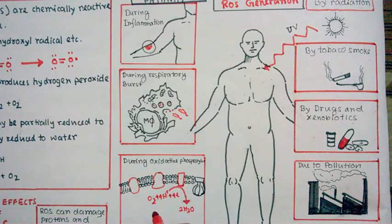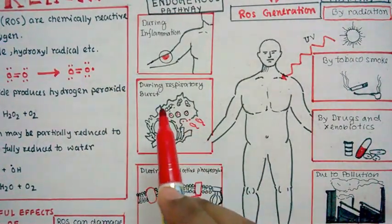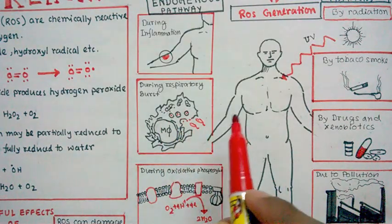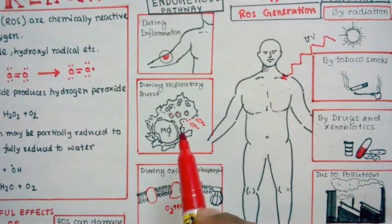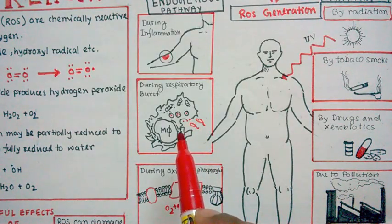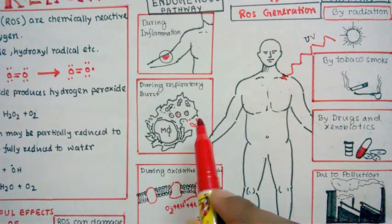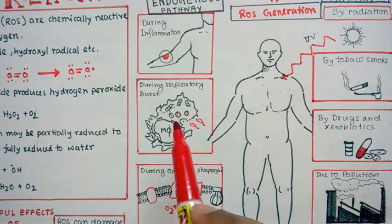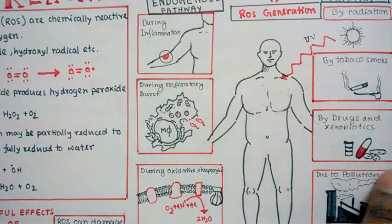So during a normal process in our body, some amount of ROS could be generated. Other steps, like during respiratory burst by macrophages, ROS is also generated. So let's say our body is invaded by a pathogen, these red colored bacteria. So our macrophage and dendritic cell would take up those bacteria.